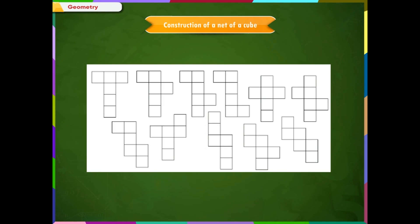Nets are a very interesting and creative part of geometry. The same shape can have different nets. For example, a cube has 11 different types of nets as shown on the screen. Nets are used to understand and find the surface area or volume of a 3D figure easily.